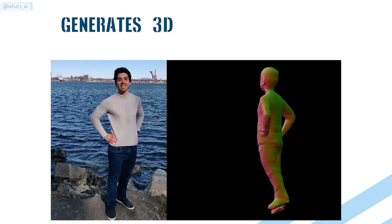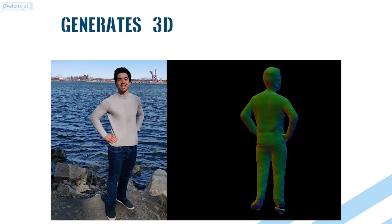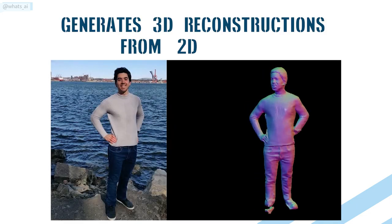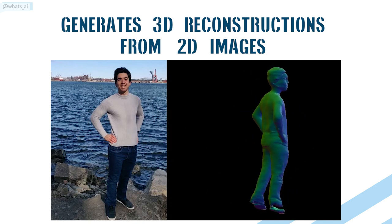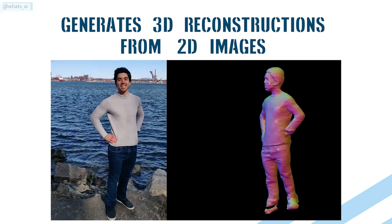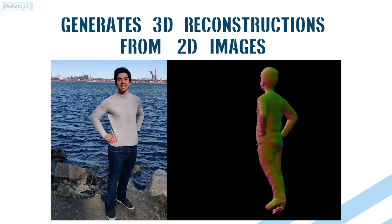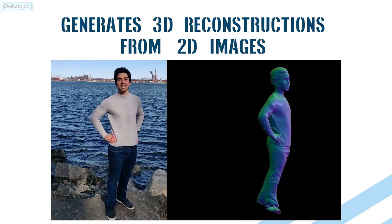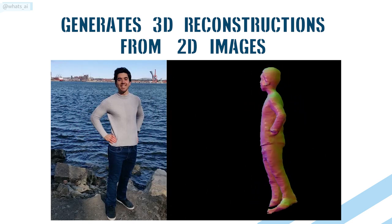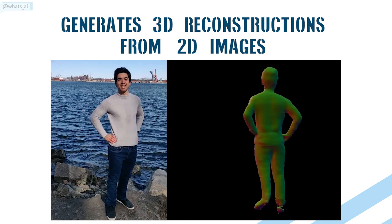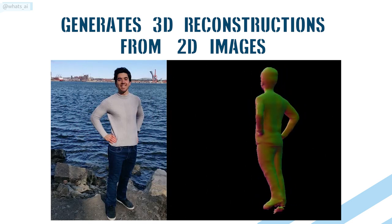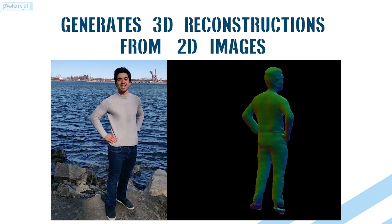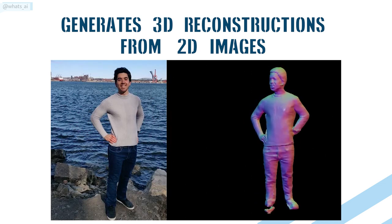This AI generates 3D high-resolution reconstructions of people from 2D images. It only needs a single image of you to generate a 3D avatar that looks just like you, even from the back. The coolest thing about this new paper is that they made a demo available on Google Colab where you can easily try it on yourself, as I will show in this video. But first, let's see how they did that.